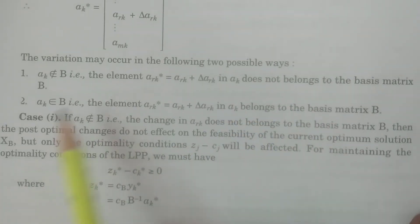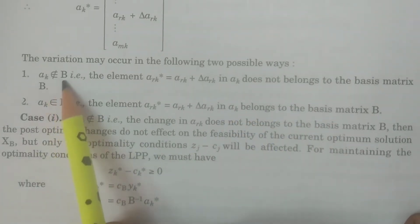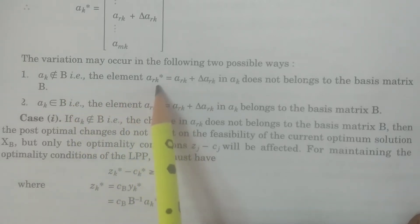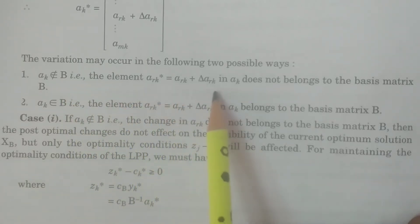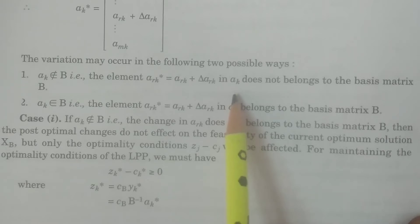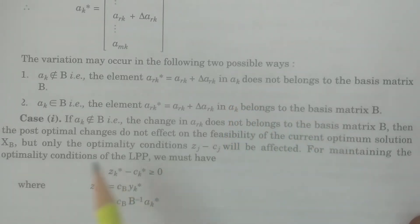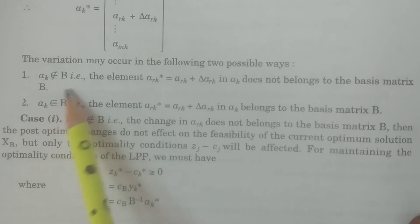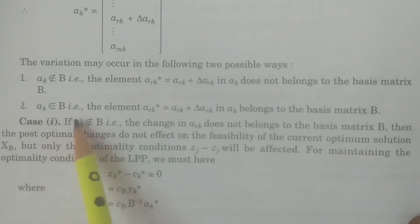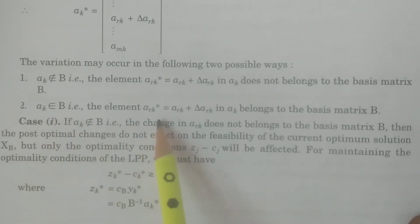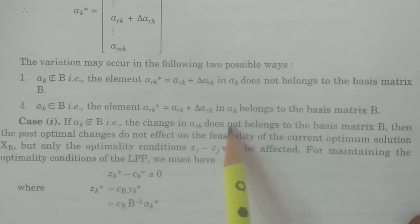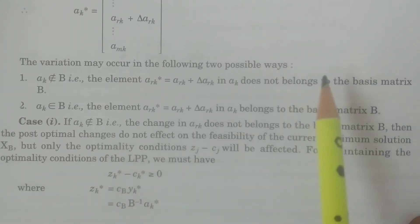The variation may occur in two following possible ways. Case 1: ak does not belong to B — that is, the element ark-star equals ark plus delta-ark is not in the basis matrix B. Case 2: ak belongs to B — that is, ark-star equals ark plus delta-ark is in the basis matrix B.